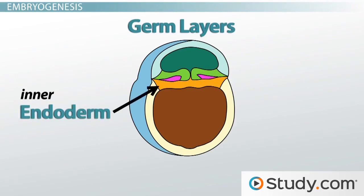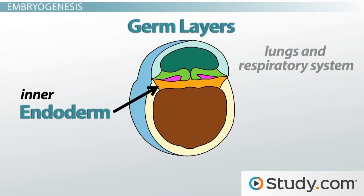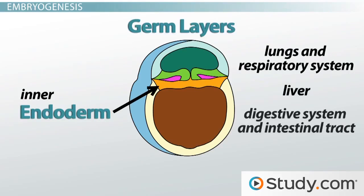And those inner body cavities are filled with your organs, and organs come from the inner endoderm. These include your lung and your respiratory system, your liver, your digestive system and intestinal tract, and your endocrine glands.